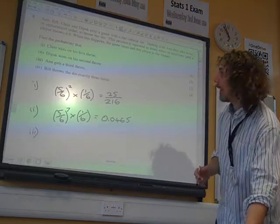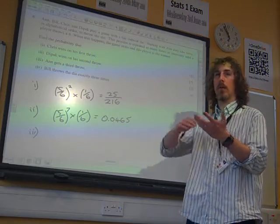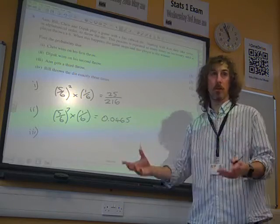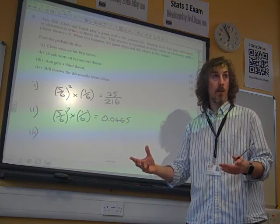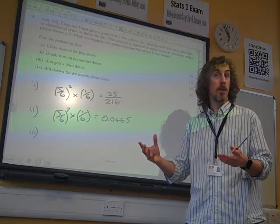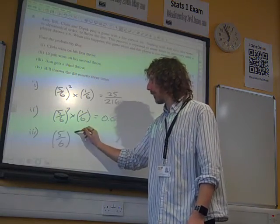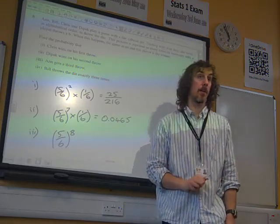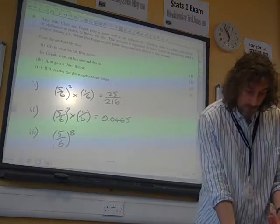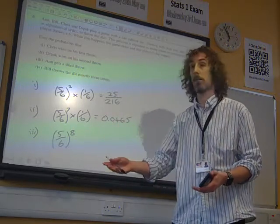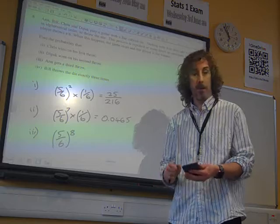So that needs to be A, B and C all having one throw unsuccessfully, followed by them all having a second throw unsuccessfully. That's eight consecutive unsuccessful throws. If that happens, that's enough. If we get eight unsuccessful throws, it doesn't make any difference what happens next, and Anne will get a third throw. That's it, that's all that needs to happen.